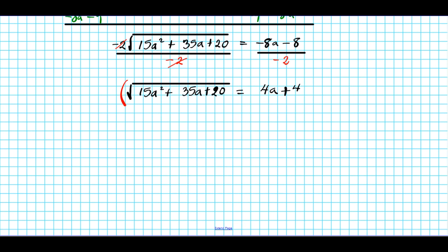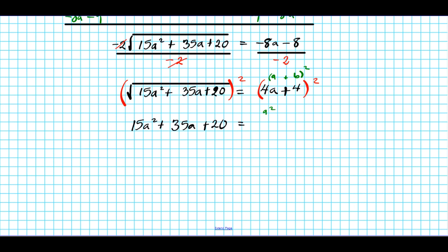With the radical isolated, we square both sides. On the left, the square root and square cancel, leaving 15a squared plus 35a plus 20. On the right, using the (a plus b) squared formula: a squared is 16a squared, 2ab is 2 times 4a times 4 which equals 32a, and b squared is 16. So we have 15a squared plus 35a plus 20 equals 16a squared plus 32a plus 16.